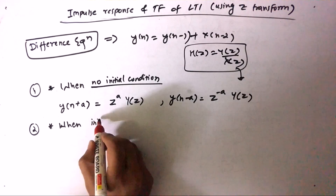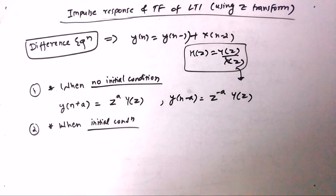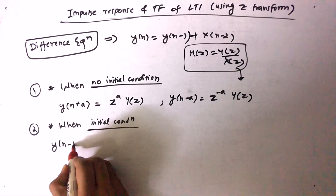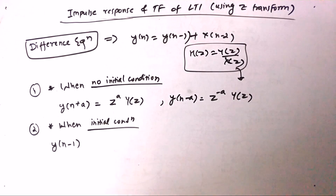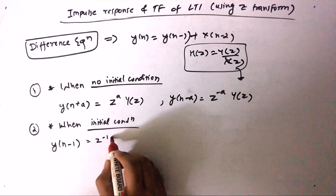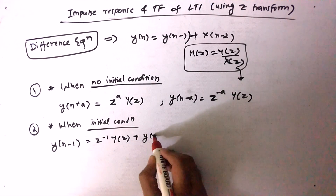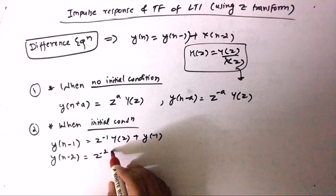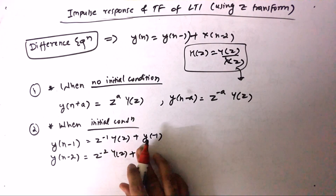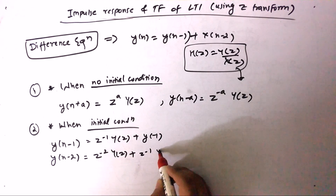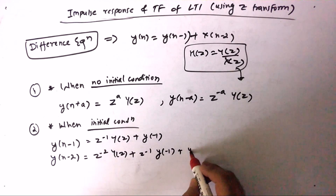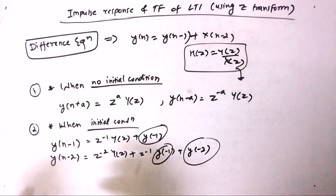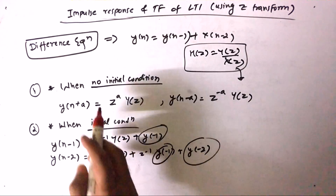When there is an initial condition, and we have Y(N−1), the formula is: Z^(−1) Y(Z) + Y(−1). If we have Y(N−2), the formula is: Z^(−2) Y(Z) + Z^(−1) Y(−1) + Y(−2). These are the initial condition formulas. If initial conditions are given, we use the initial condition formula; if not given, we use the no-initial-condition formula.